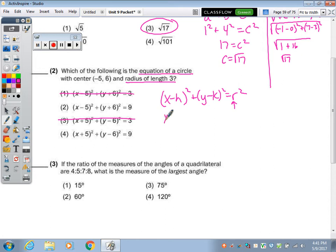And then, don't forget that it's minus h. And hk is the coordinate of the center. So x minus a minus 5, this should be x plus 5. And y minus 6.